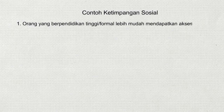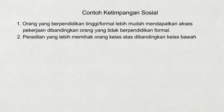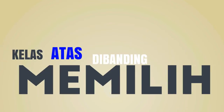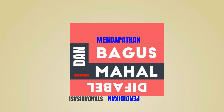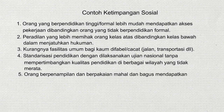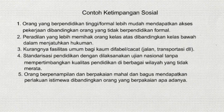Contoh ketimpangan sosial: 1. Orang yang berpendidikan tinggi formal lebih mudah mendapatkan akses pekerjaan dibandingkan orang yang tidak berpendidikan formal. 2. Peradilan yang lebih memihak orang kelas atas dibandingkan kelas bawah dalam menjatuhkan hukuman. 3. Kurangnya fasilitas umum bagi kaum difabel, seperti jalan dan transportasi. 4. Standarisasi pendidikan melalui ujian nasional tanpa mempertimbangkan kualitas pendidikan di berbagai wilayah. 5. Orang berpenampilan mahal mendapatkan perlakuan istimewa dibandingkan orang yang berpakaian apa adanya.